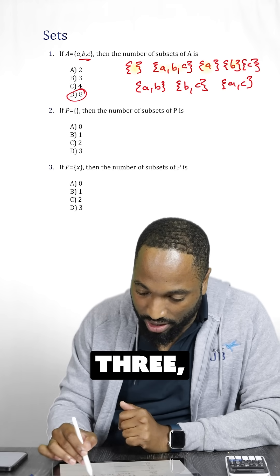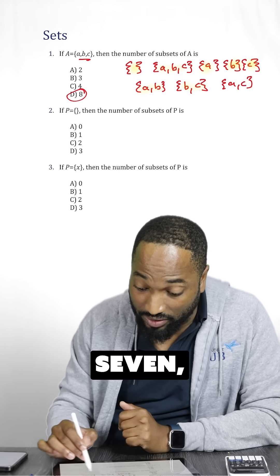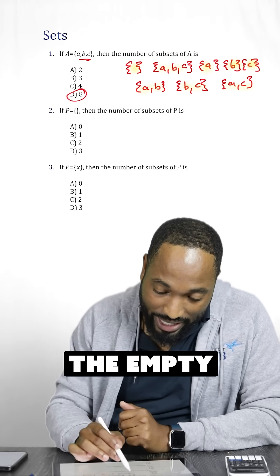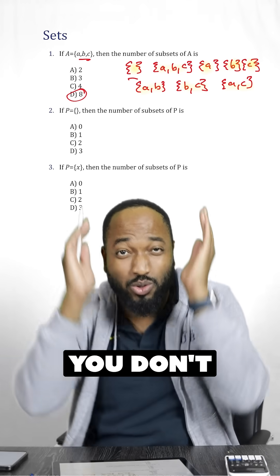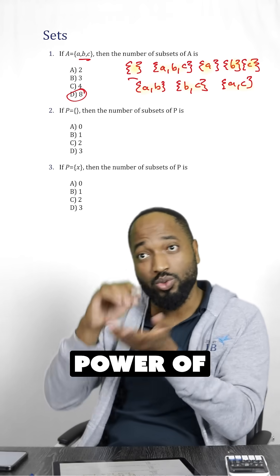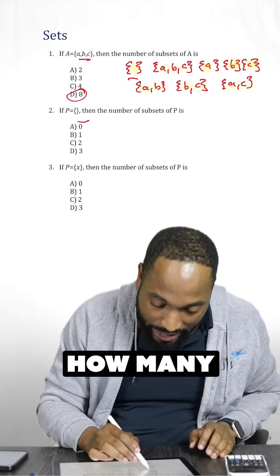So you have the empty set, 1, 2, 3, 4, 5, 6, 7, 8 sets. Most people forget the empty set if they try to list it out like this, but you don't need to list it out. You can just put 2 to the power of the number of elements. How many elements you're seeing in here?